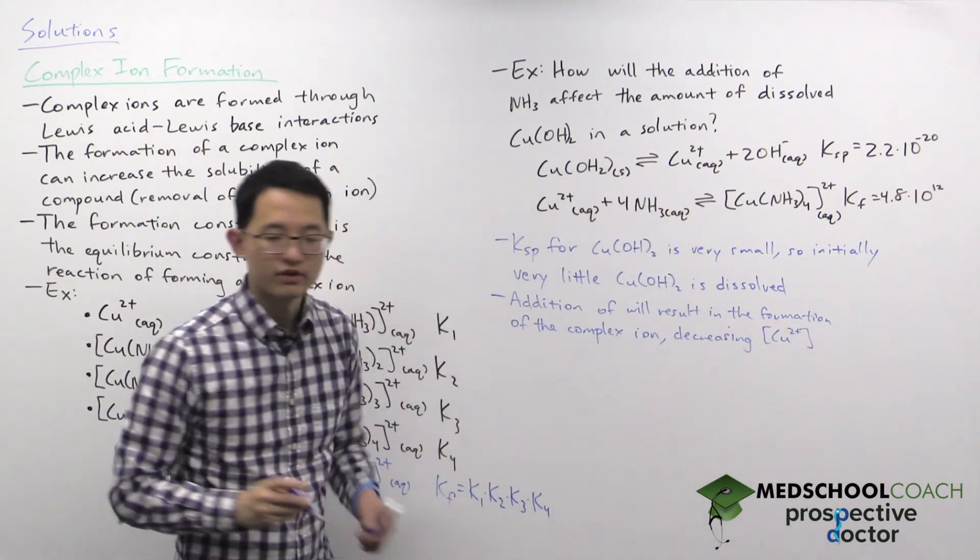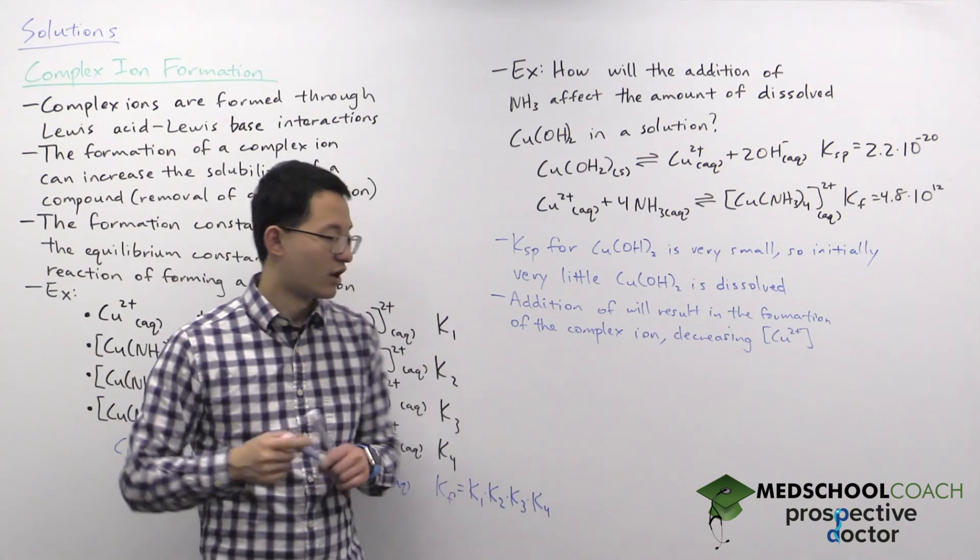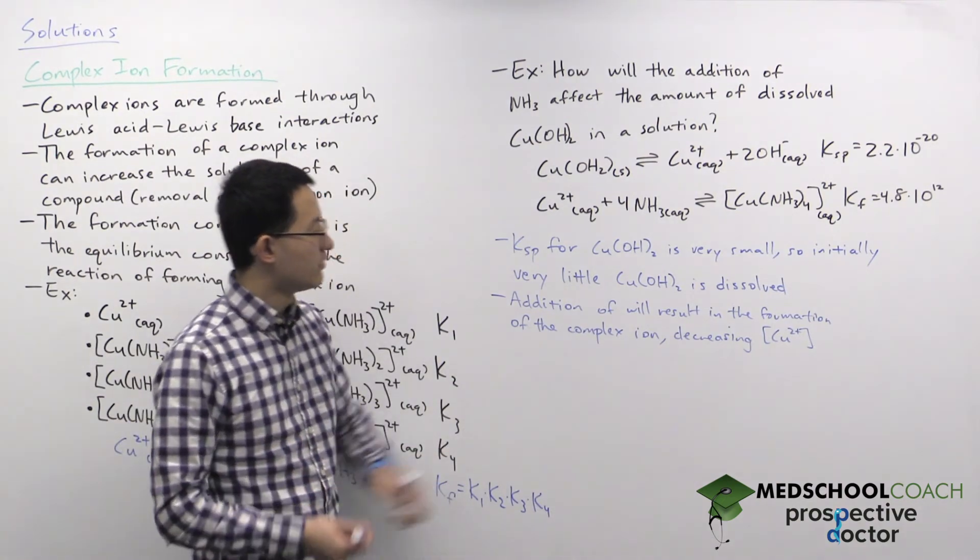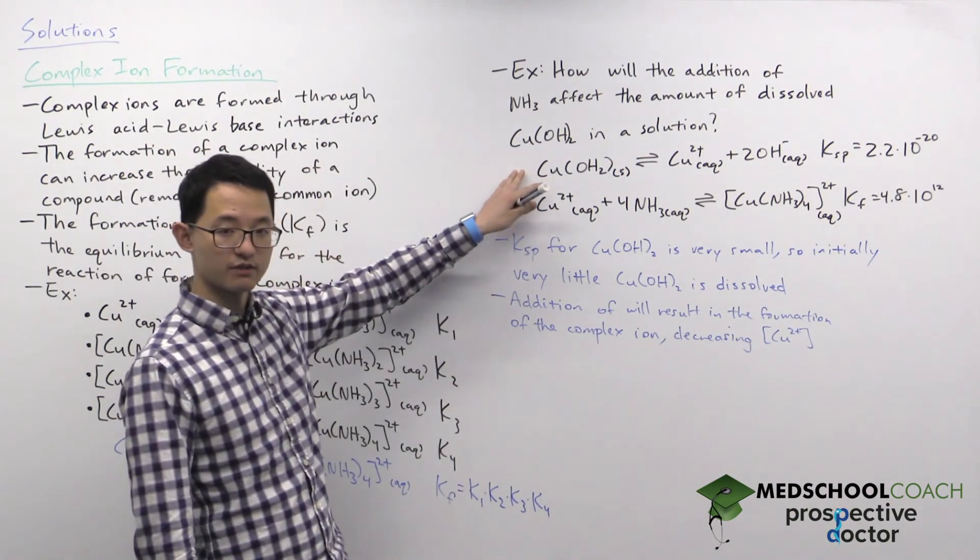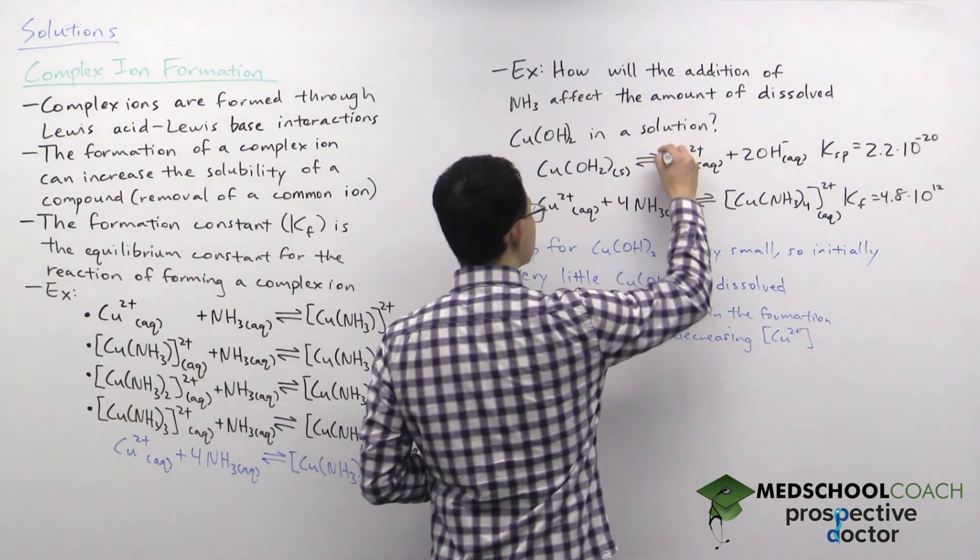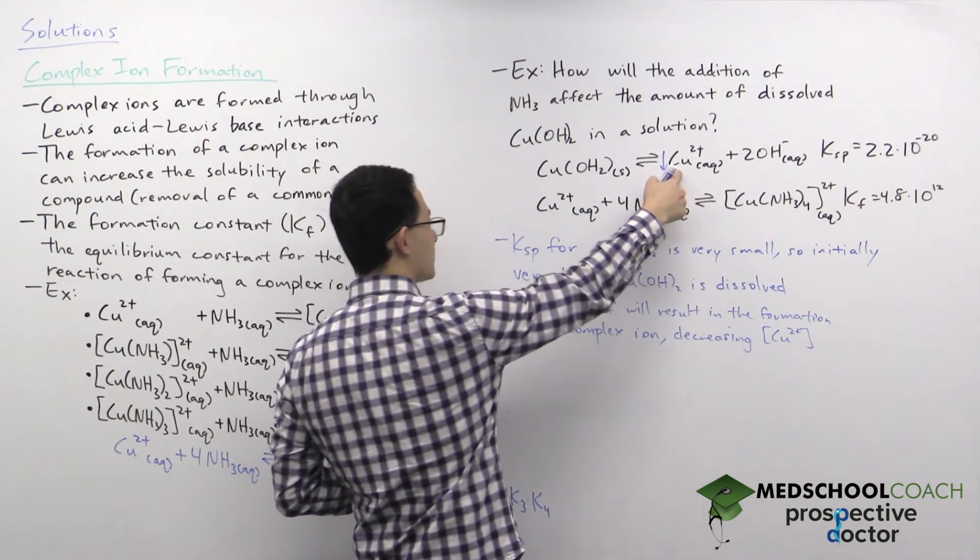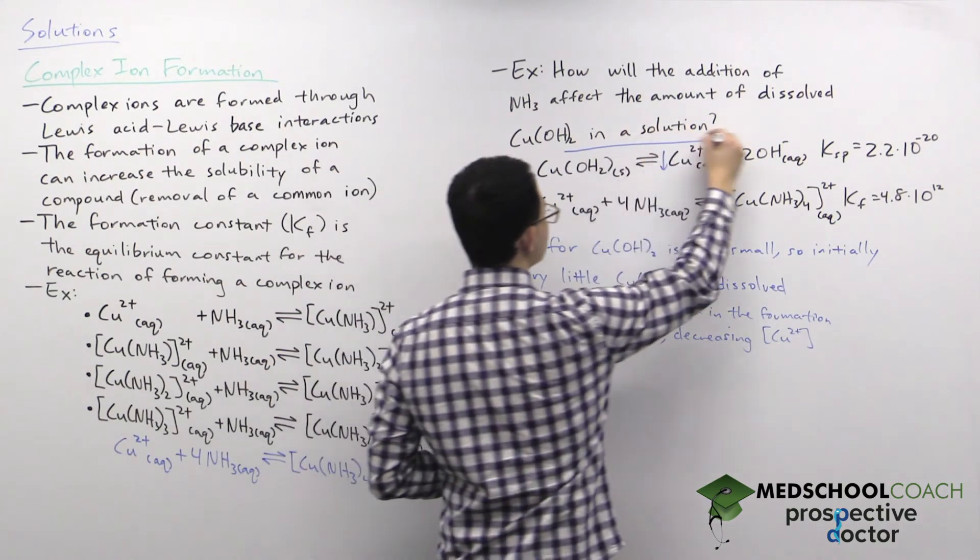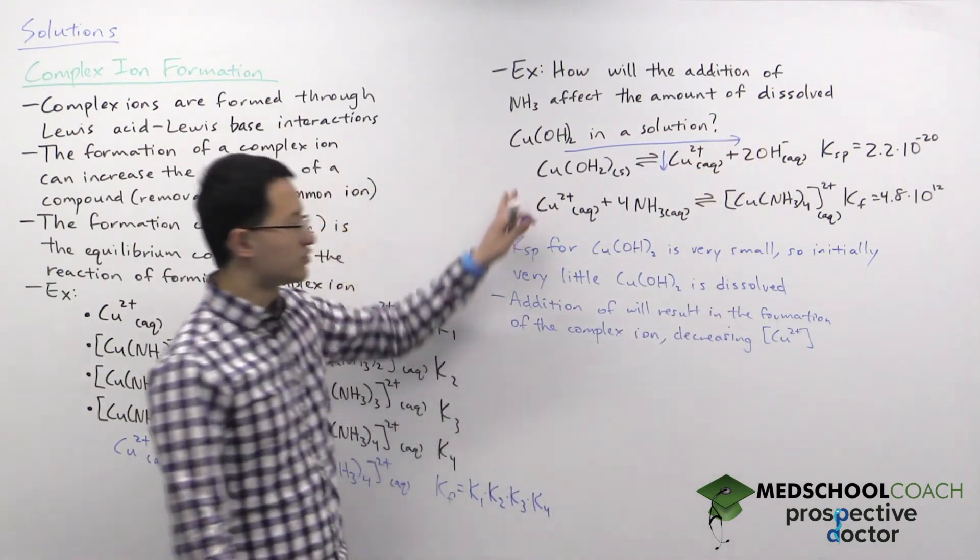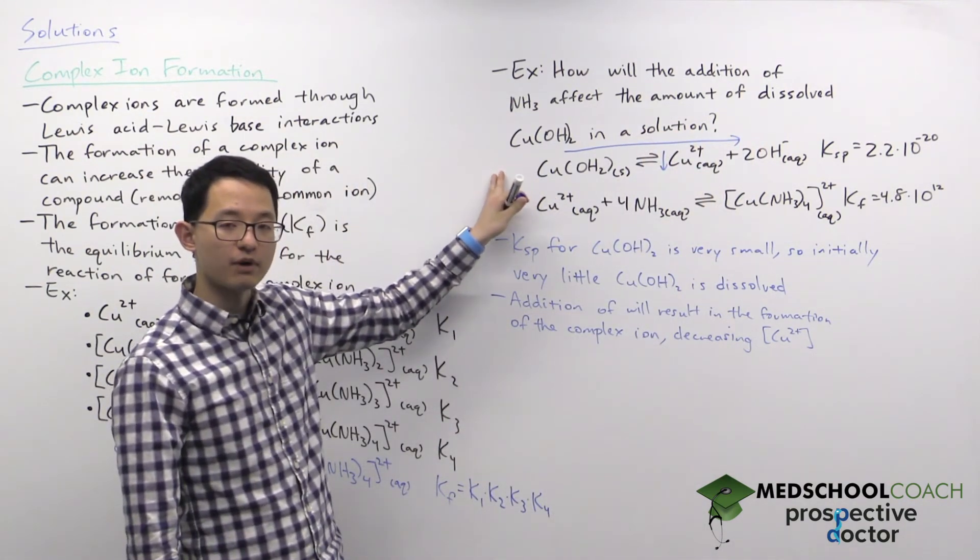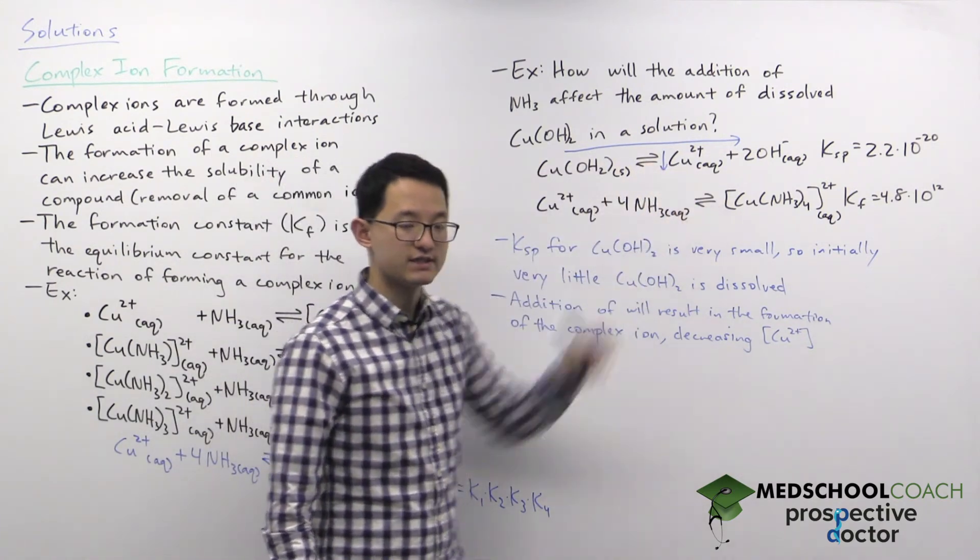Now what's important about decreasing the concentration of copper cation in solution? Well if you look at this reaction we can apply Le Chatelier's principle. If you decrease the concentration of one of the products, the copper cation, this reaction is going to shift to the right which is going to make more of the copper hydroxide dissolve in solution.